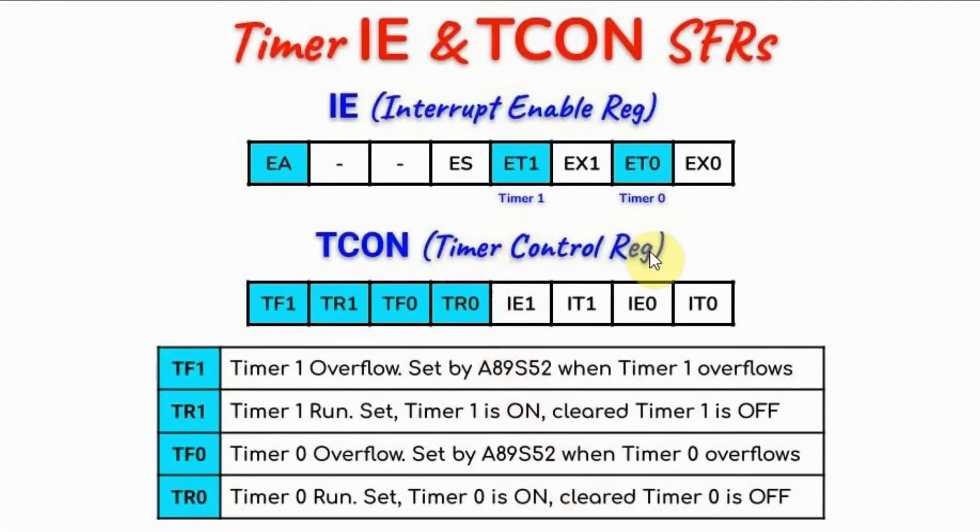This is the timer control register, where these four bits are related to the timers. TR0 means timer 0 run. When set, timer 0 will be turned on. When clear, timer 0 will be turned off. TF0 is timer 0 overflow flag. It is set by the microcontroller when timer 0 overflows. The same applies for TR1 and TF1.